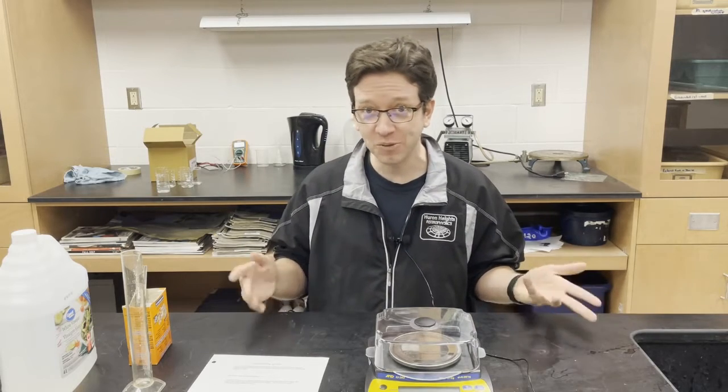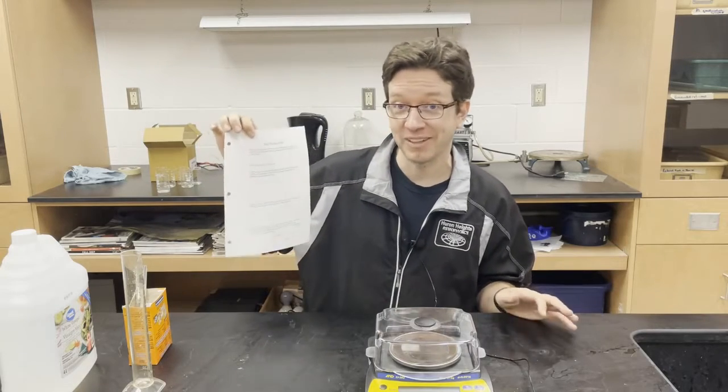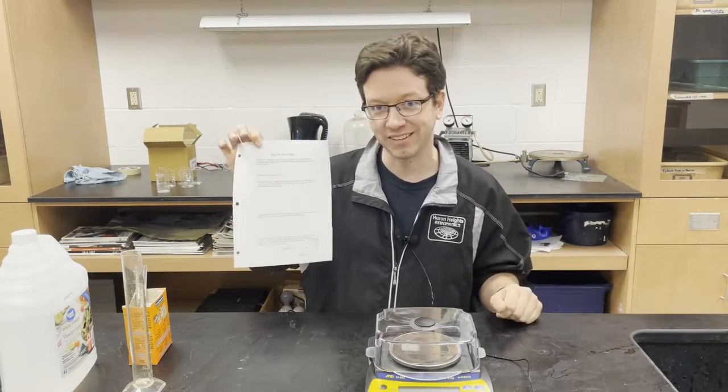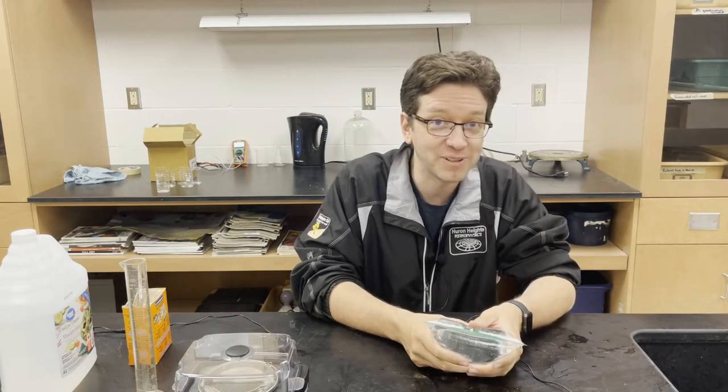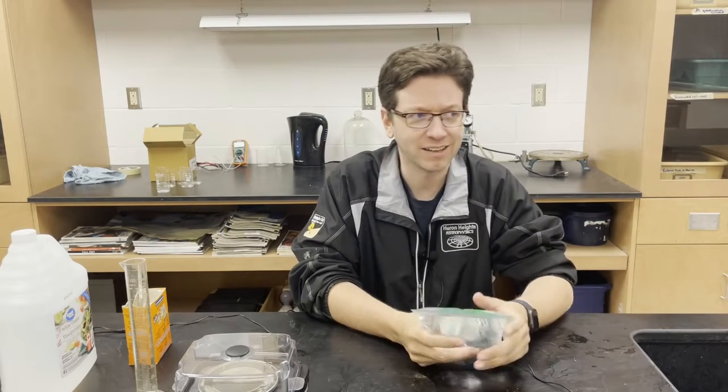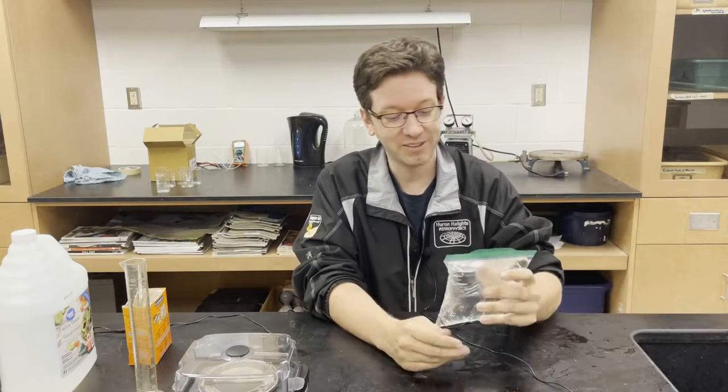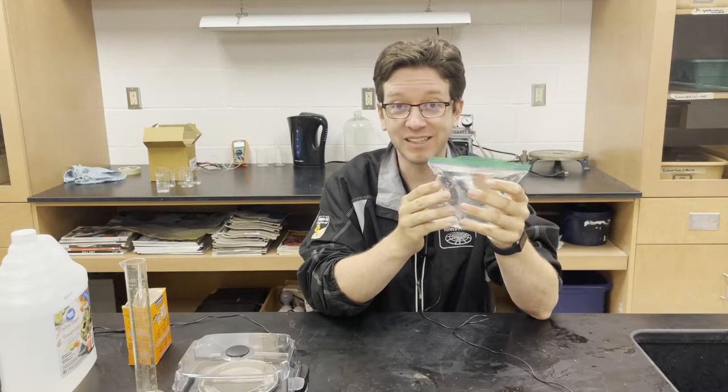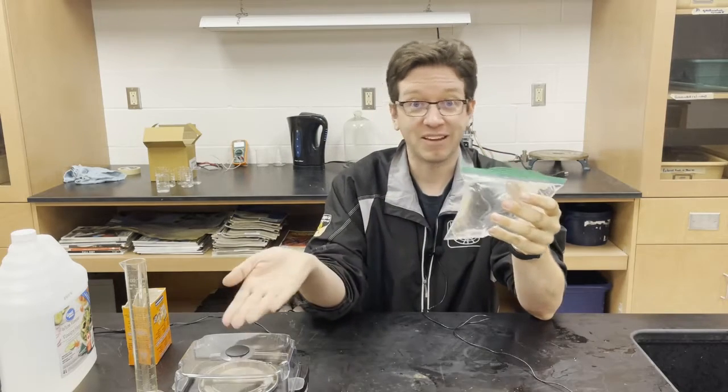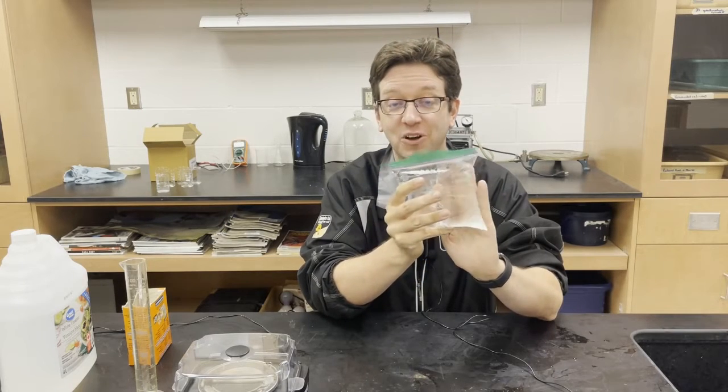All right, so this is a fairly simple activity I do with my Grade 11 chemistry class, and if you want to try it at home you only need some basic equipment. You can follow along with the handout that I use, which you can download for free in the description below. The first thing we need to do is figure out how much volume is in our ziplock bag. One way you can do it is to figure out the mass of the ziplock bag and then the mass of the water with the ziplock bag. If you have a kitchen scale and knowing the density of water, you can figure out the volume of the ziplock bag.